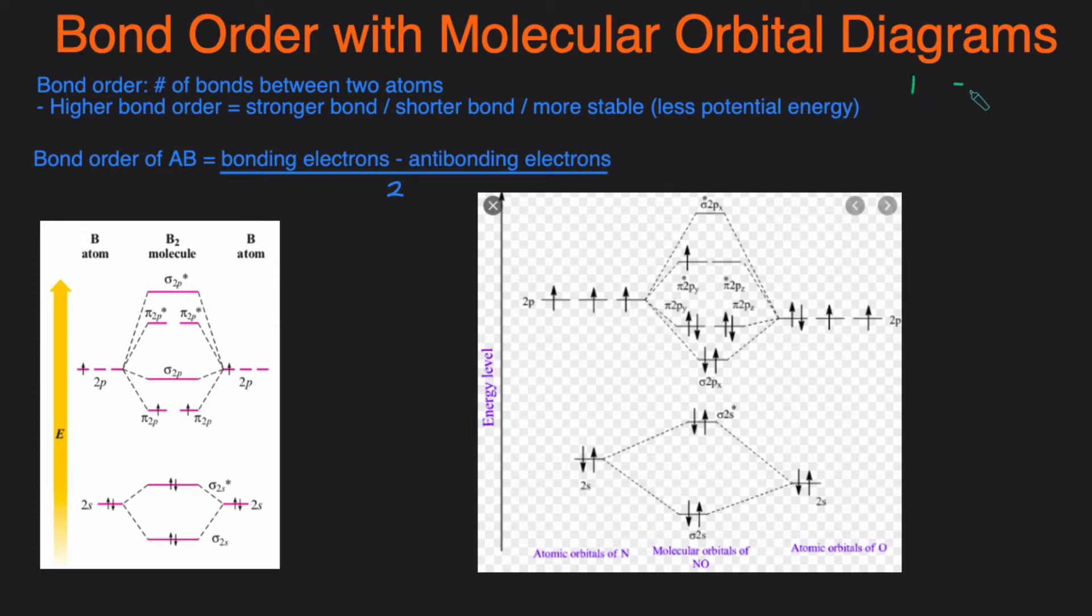For example, if you have bond order one that's a single bond, bond order two means you have a double bond, and bond order three means you have a triple bond. And you can also have partial bond orders like 1.5, which means there's one and a half bonds that exist between two atoms, and that case is possible whenever you're dealing with resonance.